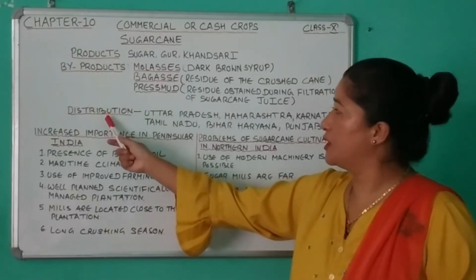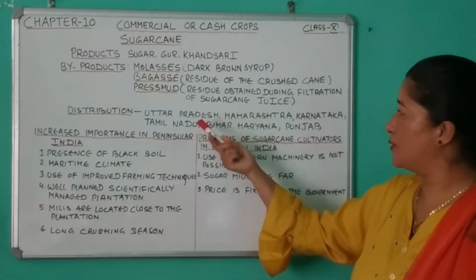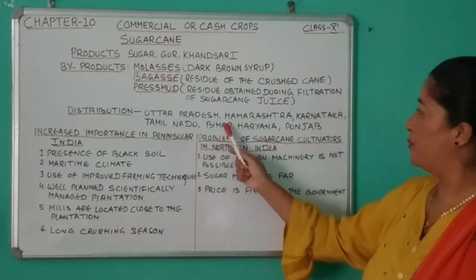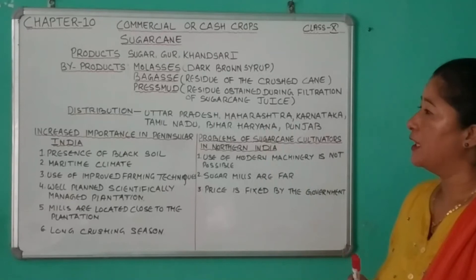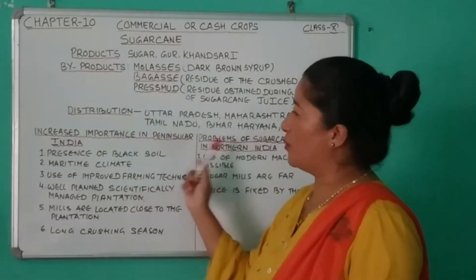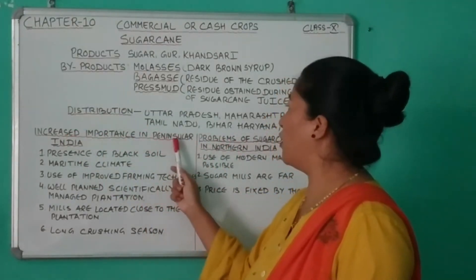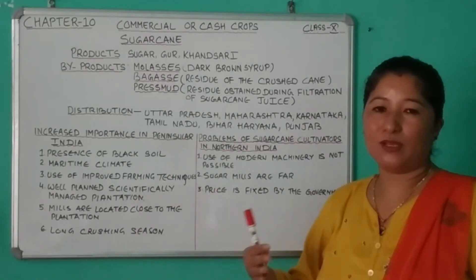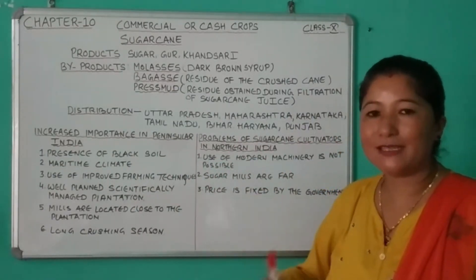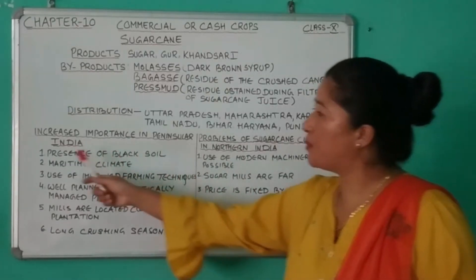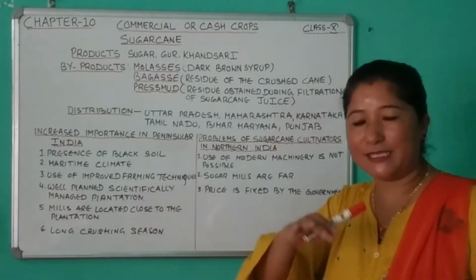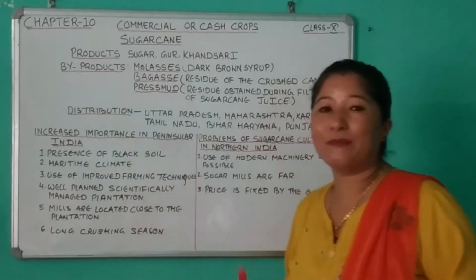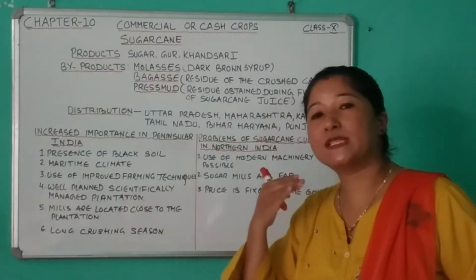The distribution of sugar cane: Uttar Pradesh is the leading producer, followed by Maharashtra, Karnataka, Tamil Nadu, Bihar, Haryana, and Punjab. Now let's see the increased importance of sugar cane cultivation in peninsular India — why it is more favorable in southern states compared to northern states. First, the presence of black soil in the Deccan Trap is suitable for the growth of sugar cane. Second, maritime or oceanic humid climate, which is free from summer loo winds and winter frost.